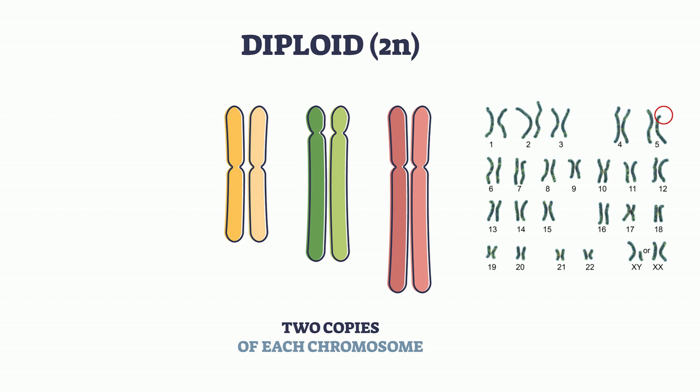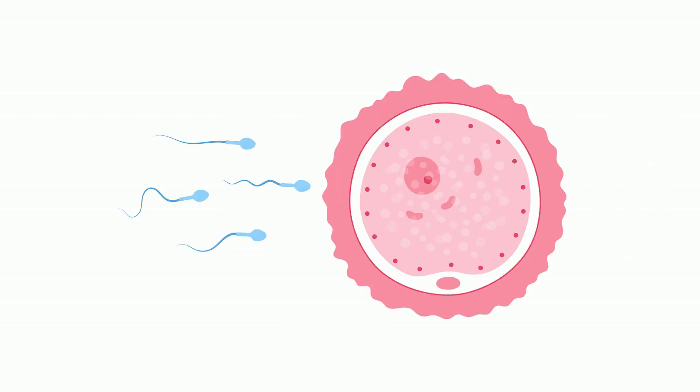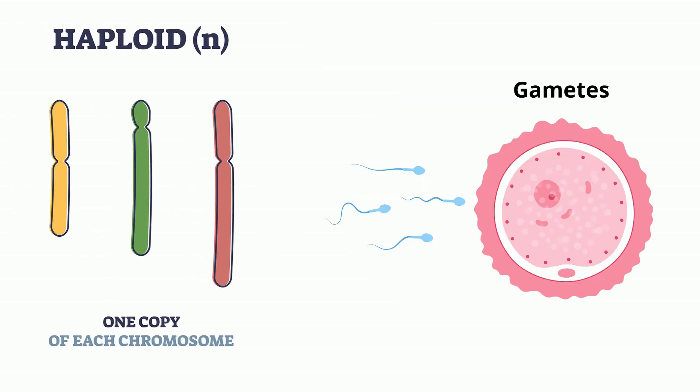Meiosis also creates new cells, but these cells are called gametes, which for males is a sperm cell, and for females it's the egg cell. These cells are haploid, which means that they have one set of chromosomes.